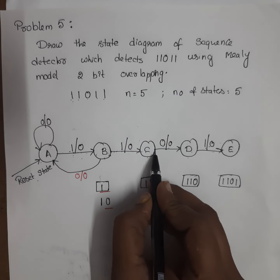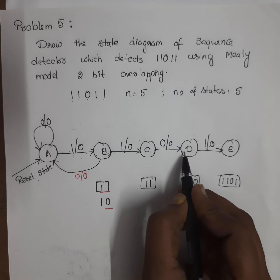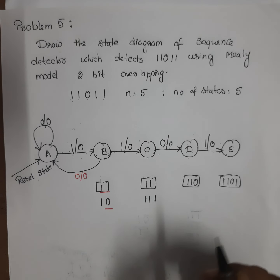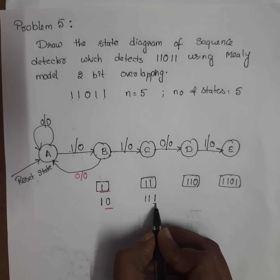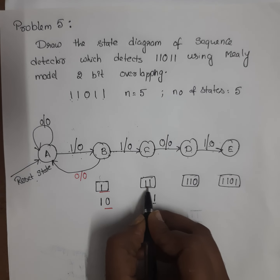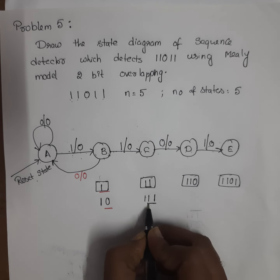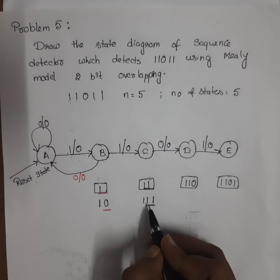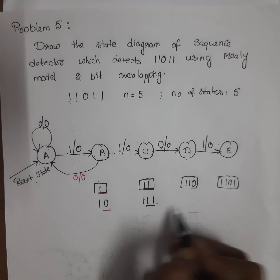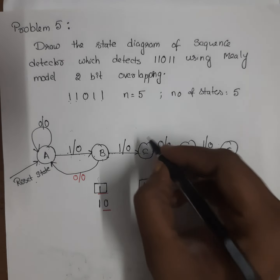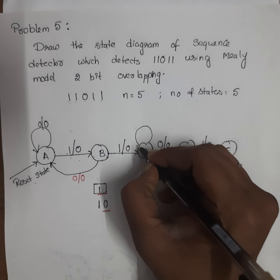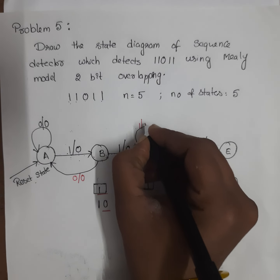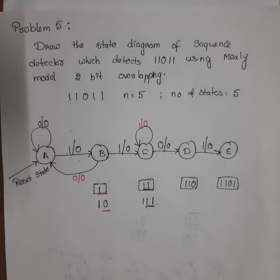For state C, when input is 0, it goes to the next state. For input 1, we compare 2 bits — the 2 bits in the inbox with the 2 bits of the state. If there is a match, stay in the same state. Output is 0.